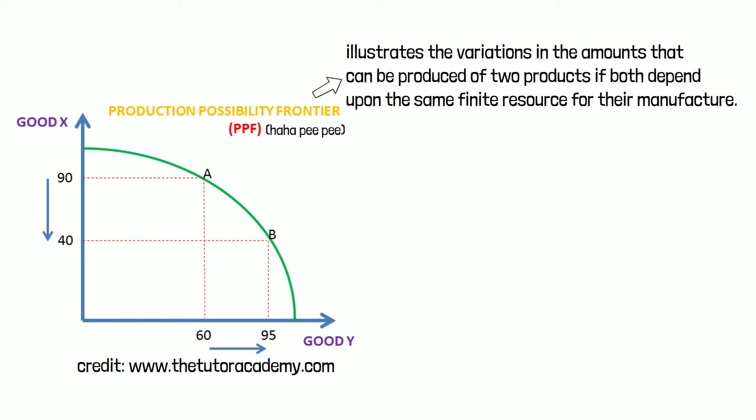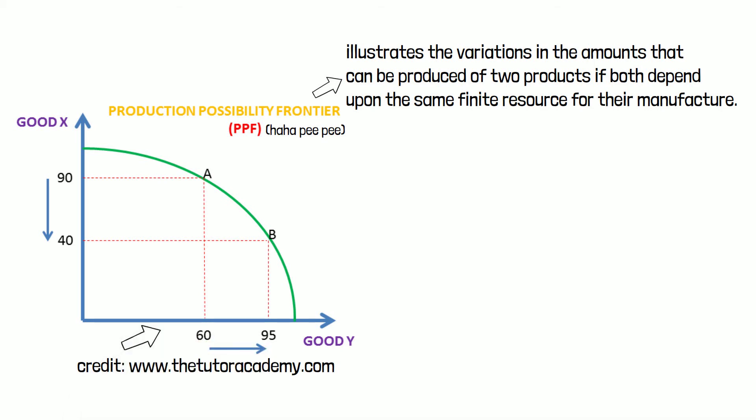Since the basic problem in economics is how to best allocate scarce resources, a production possibility frontier shows the options that are available when you consider the production of just two types of goods or services. This production possibility frontier shows the maximum number of goods Y, on the horizontal axis, and X, on the vertical axis, that can be made using the existing level of resources.